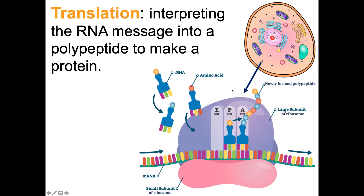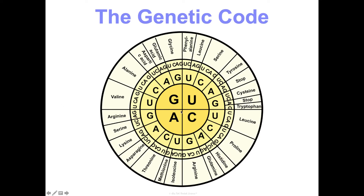We're going to interpret the RNA message into a polypeptide to eventually make a protein. Looking at the genetic code again — there are 20 different amino acids, and then there are stop codons. If the codon is U-A-A, U-A-G, or U-G-A, you stop translating. Those are what tell the ribosome to end and release the completed polypeptide chain.